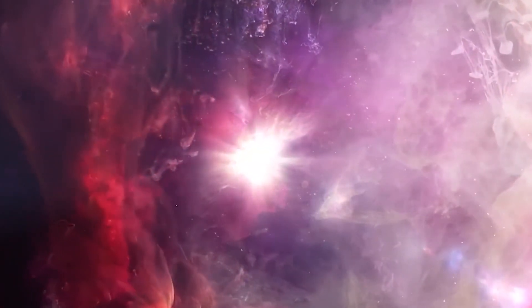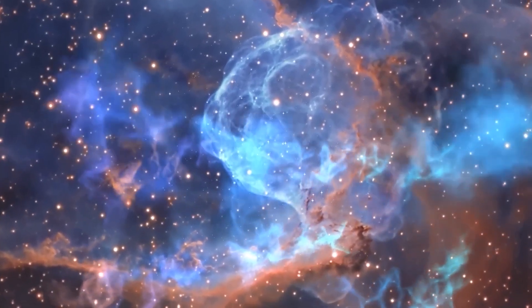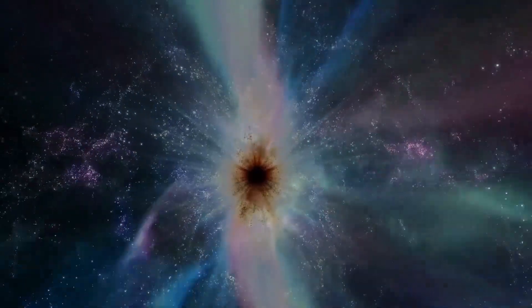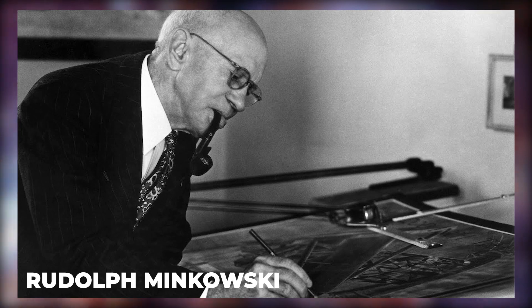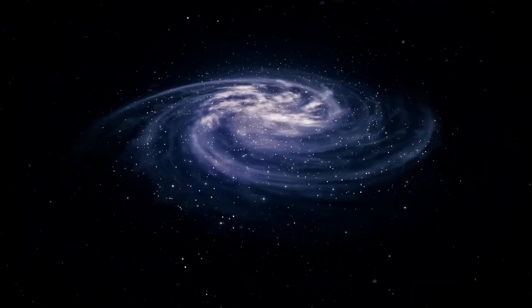Supernovae flare up quickly and unexpectedly before slowly fading away over the course of weeks or months. Although supernovae can come from many different places, all of them involve the explosion of a star. According to a classification scheme created by Swiss astronomer Fritz Zwicky and German-American astronomer Rudolf Minkowski, supernovae are currently split into Type 1 and Type 2 categories.